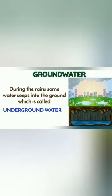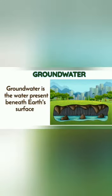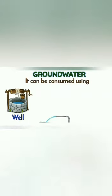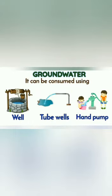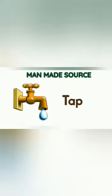Groundwater. During the rains, some water seeps into the ground, which is called underground water. It is the water present beneath the earth's surface. Groundwater can be consumed using wells, tube wells, and hand pumps. Water from all these sources reaches our house through a tap.